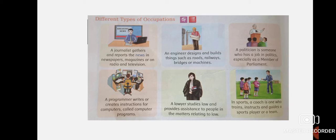A politician is one who is elected by the people and is in the government. A programmer writes or creates instructions for computers, called computer programs. A lawyer studies law and provides assistance to people in matters relating to law and rules and regulations. In sports, a coach is one who trains, instructs, and guides a sports player or a team.